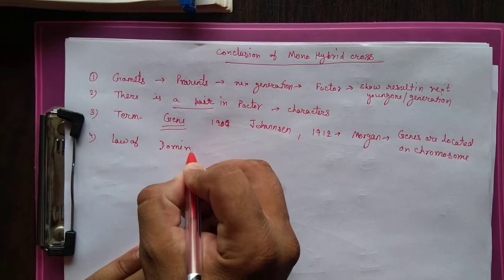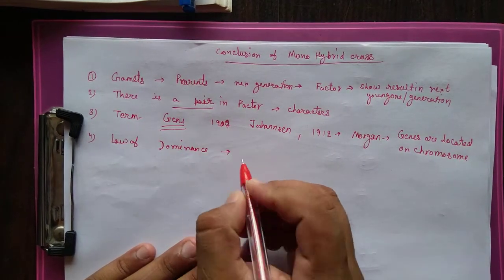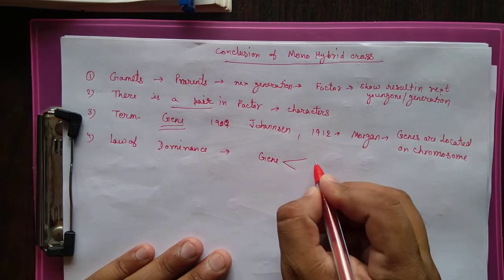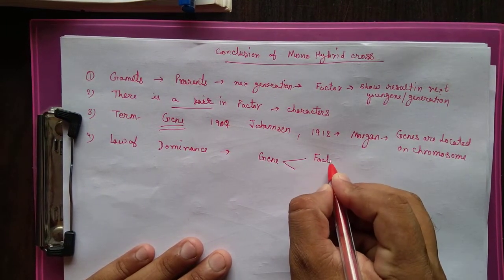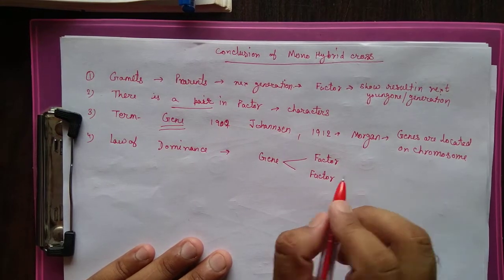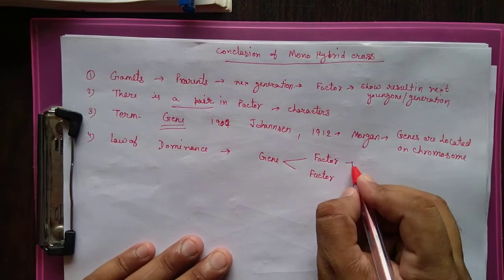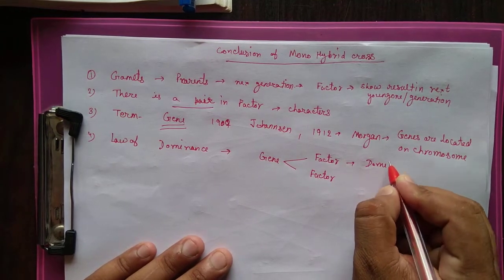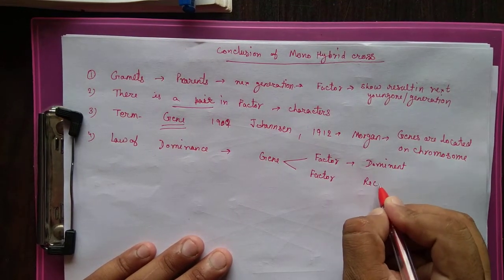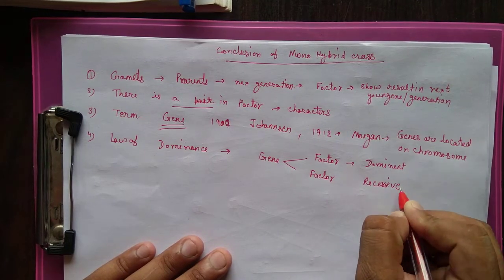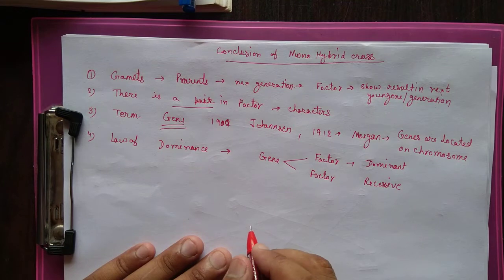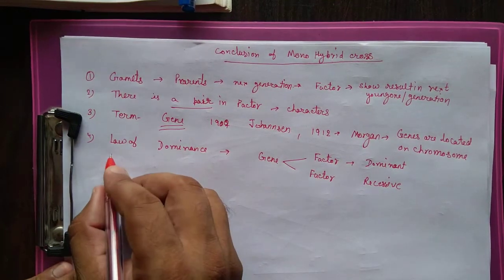The next law is the law of dominance. This means that a gene having two factors — only one factor is dominant and another one is recessive. This is known as the law of dominance.